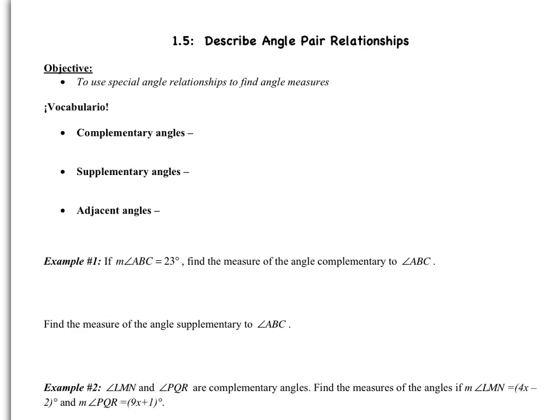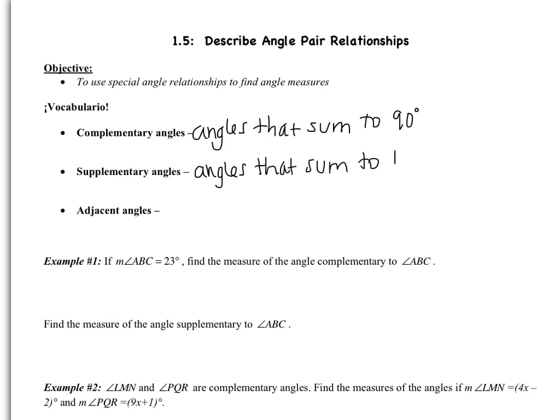Complementary angles are angles that sum to 90 degrees. Remember, sum just means add, so two angles that add to be 90 degrees. For example, an angle that's 30 degrees is complementary to an angle that's 60 degrees because they sum to 90. Supplementary angles are angles that sum to 180 degrees. So an angle that's 60 degrees is supplementary to an angle that's 120 degrees because they add to be 180.